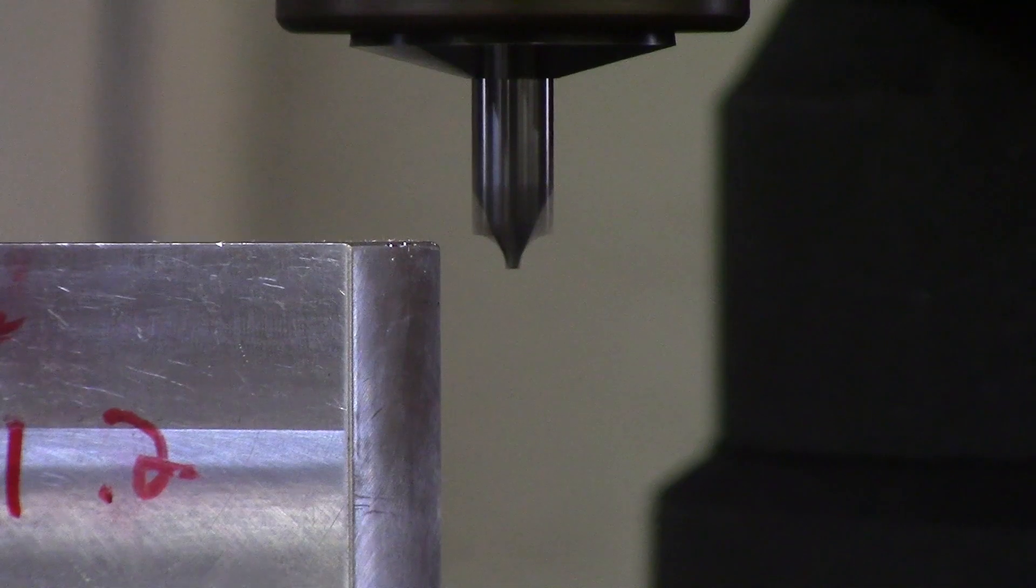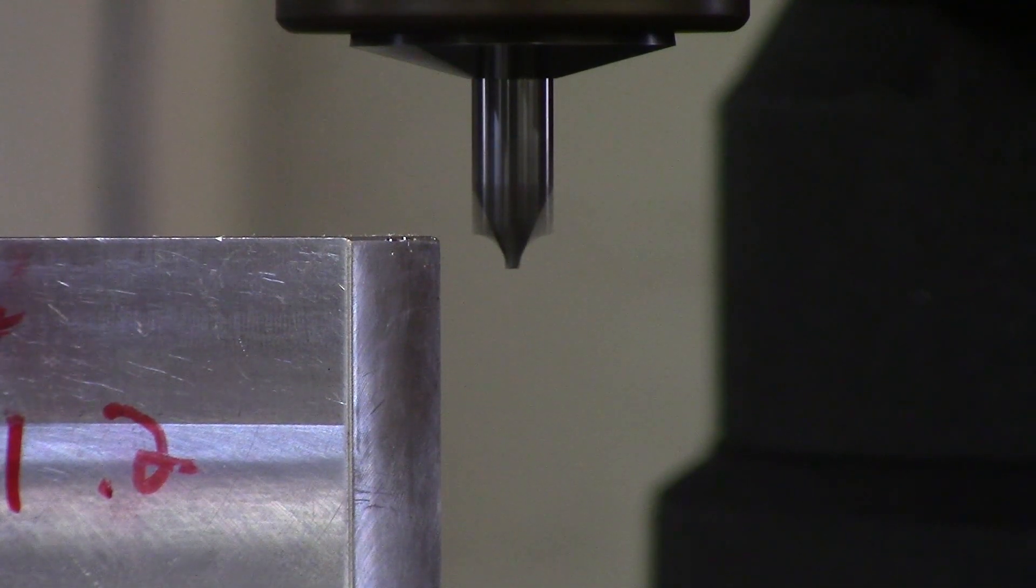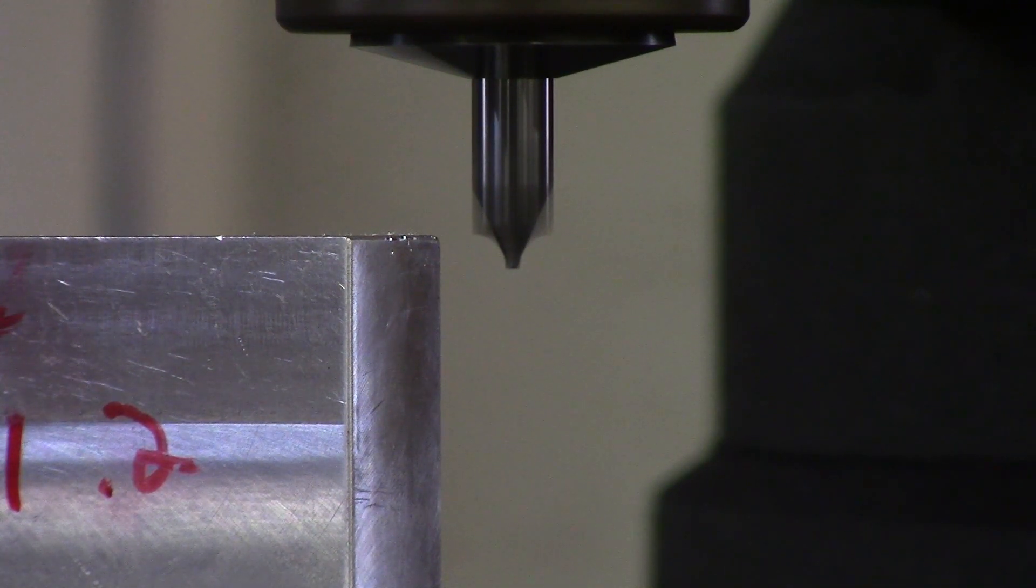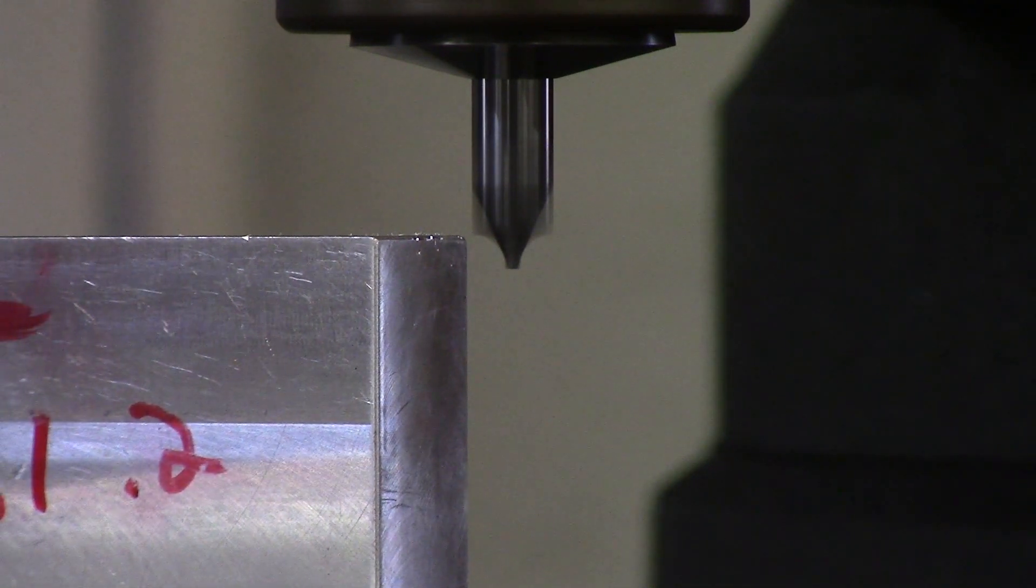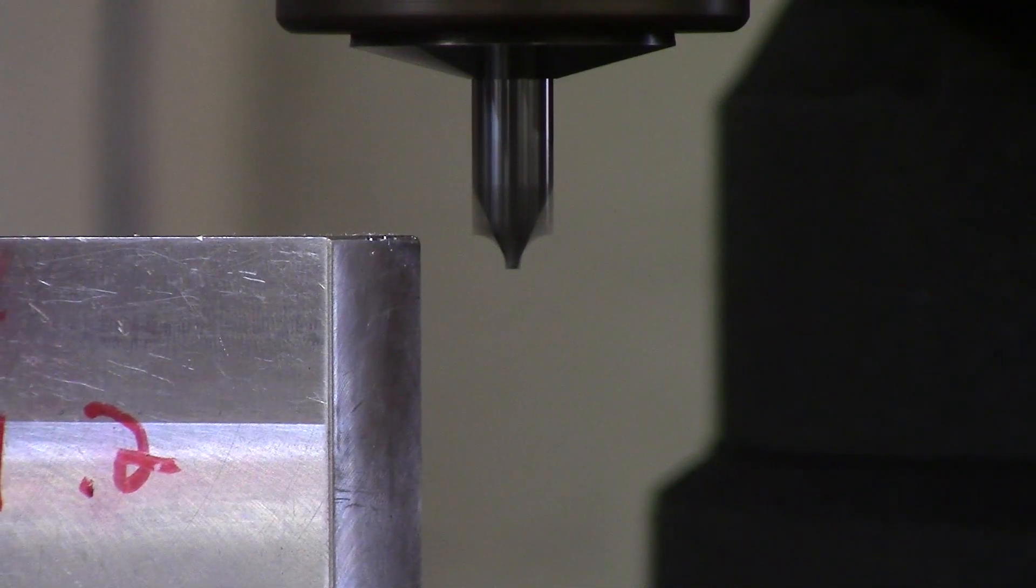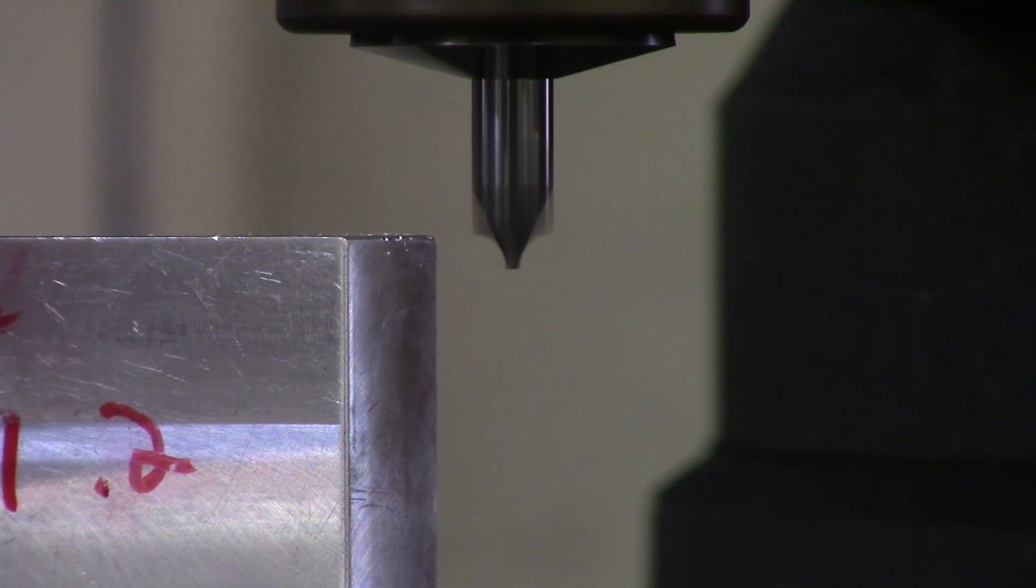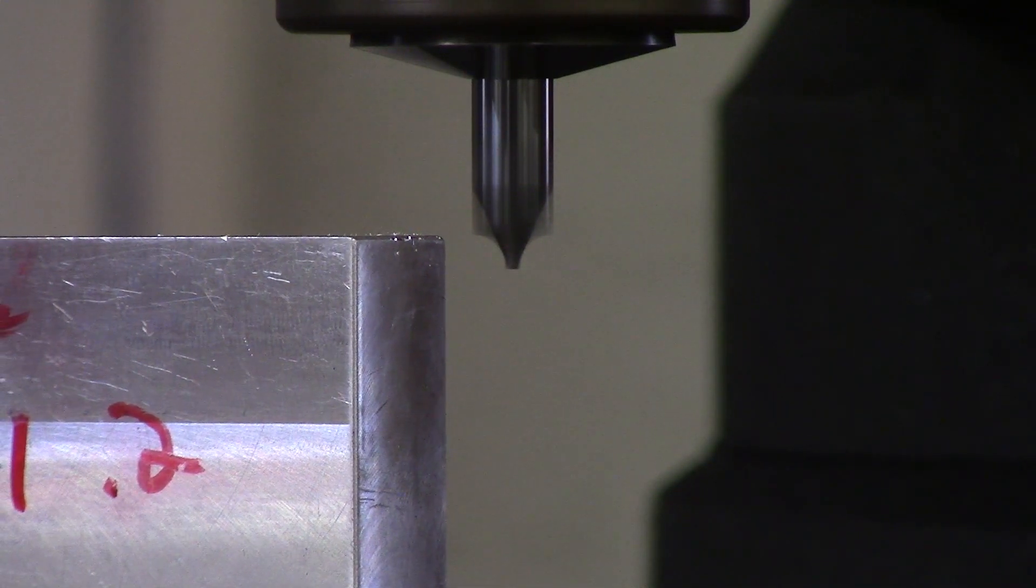We're going to move away and then back to our zero to get the backlash out. Now all we have to do is move over back to our zero in X. Remember, if you go past it, come away and then come back to it so you can get the backlash of the machine out.